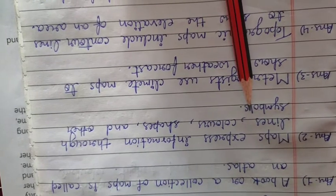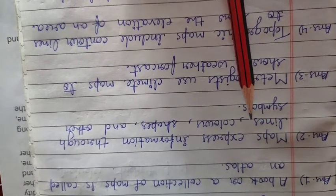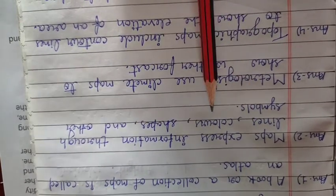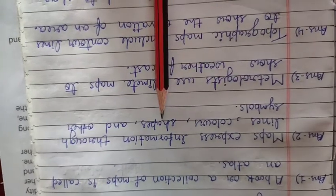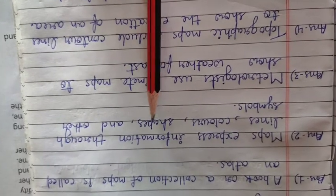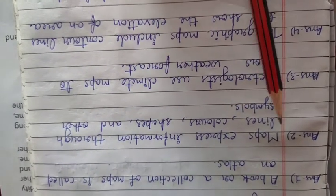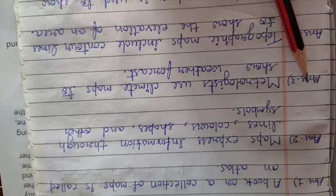Maps कैसे दिखाते हैं? कैसे अपने expressions दो करते हैं? Lines के दोरा, colors के, shapes के दोरा और अधर symbols से हैं और चिन्हों से.